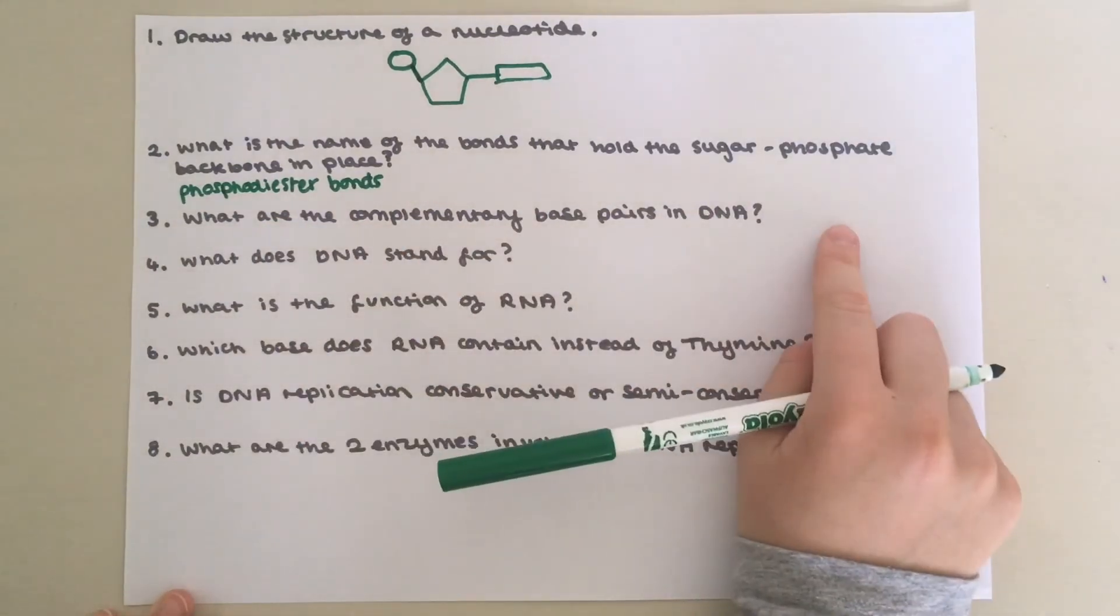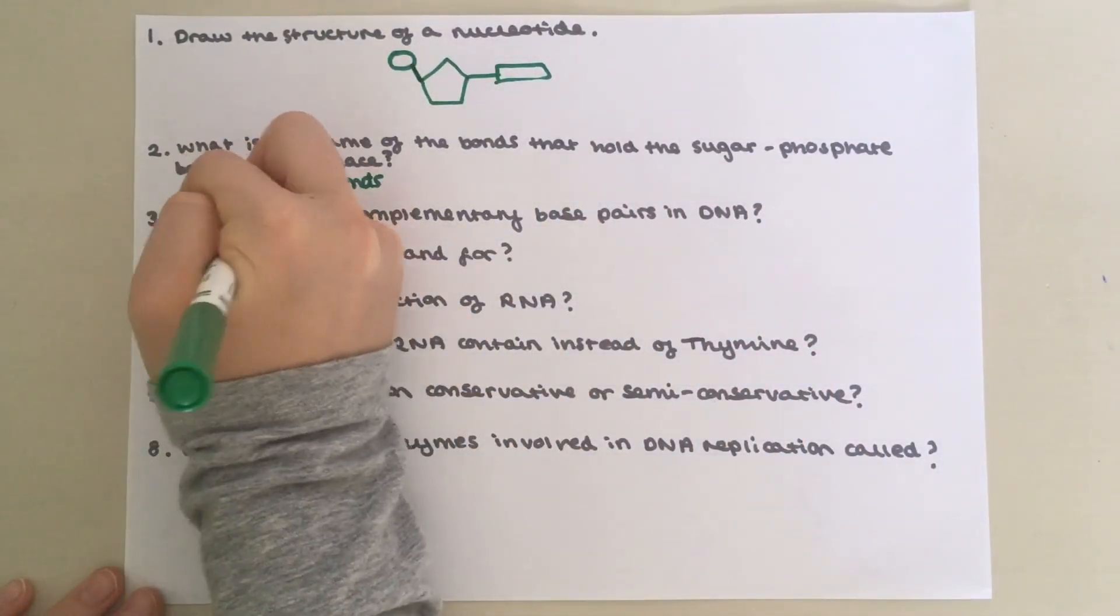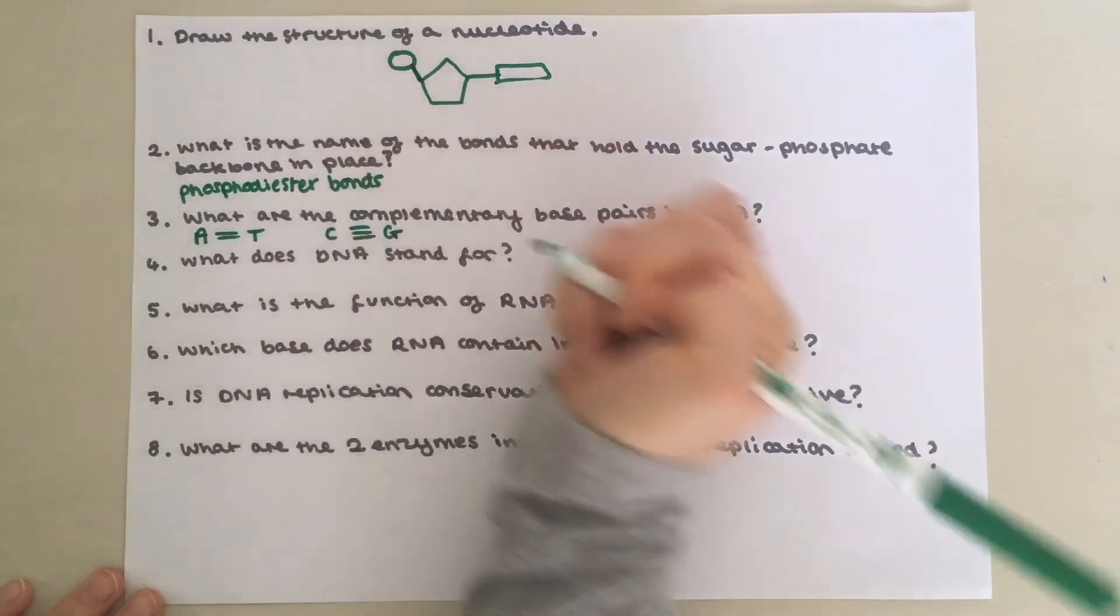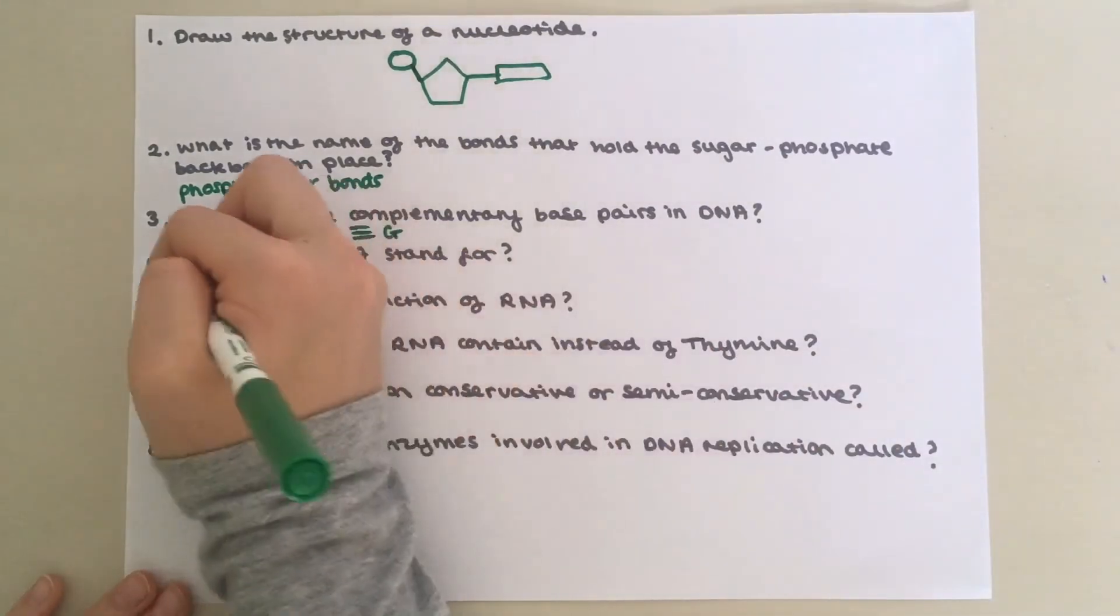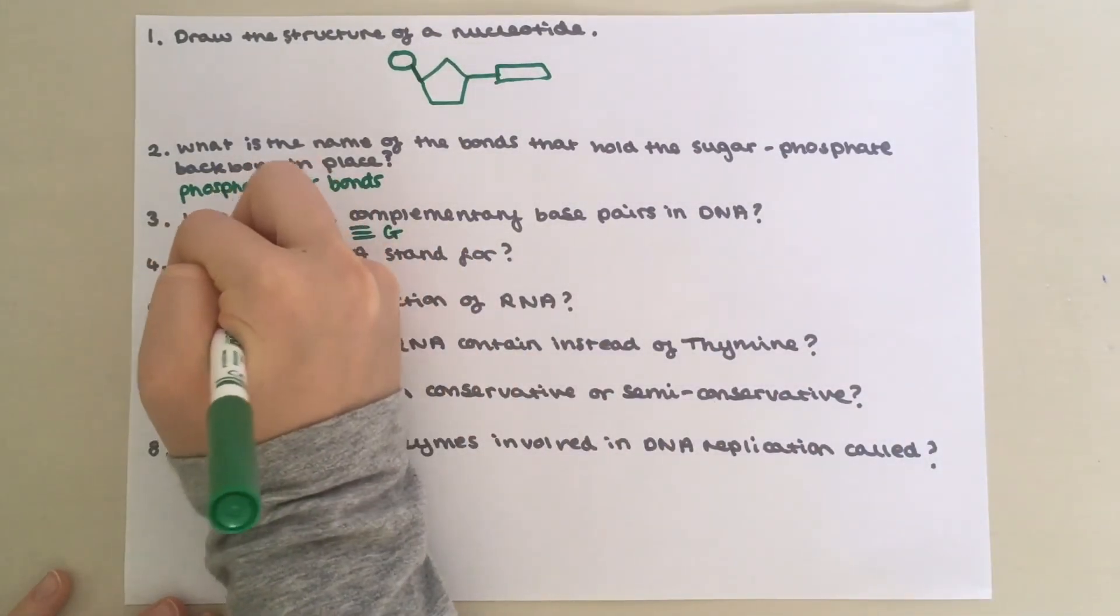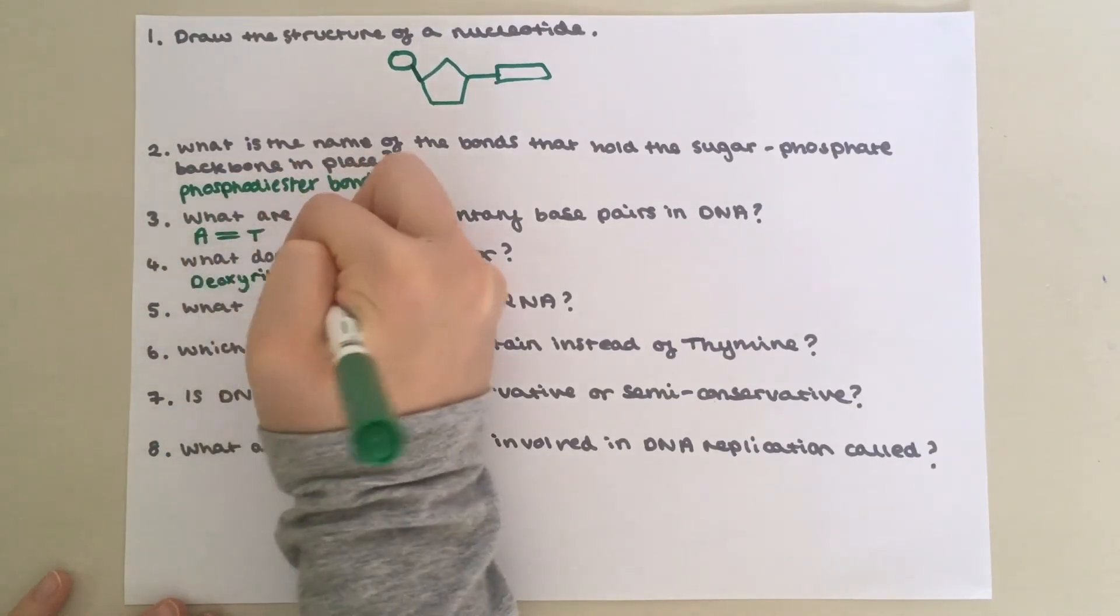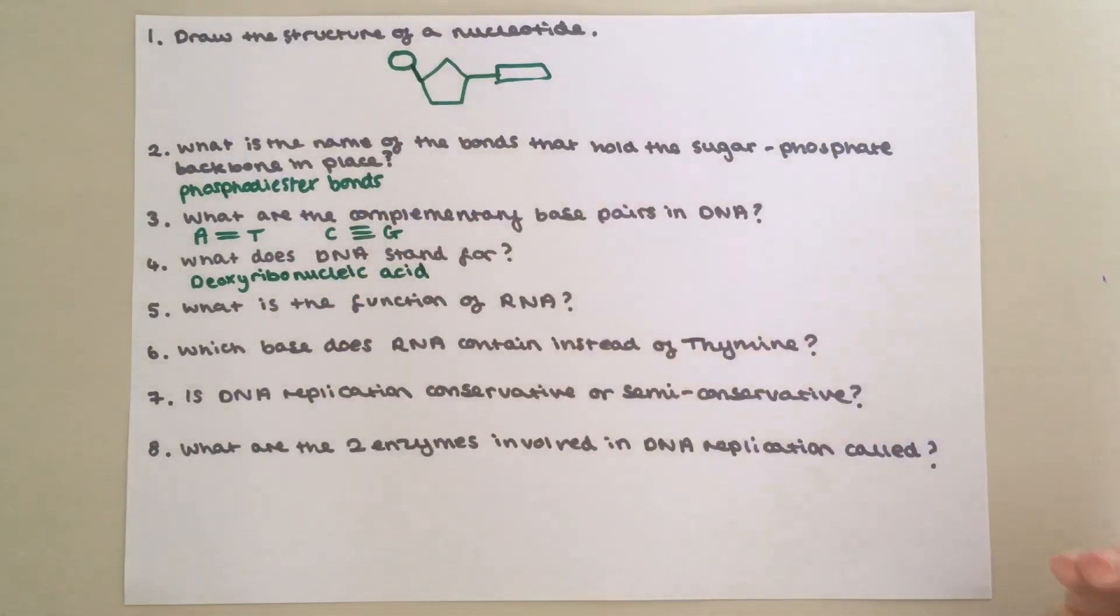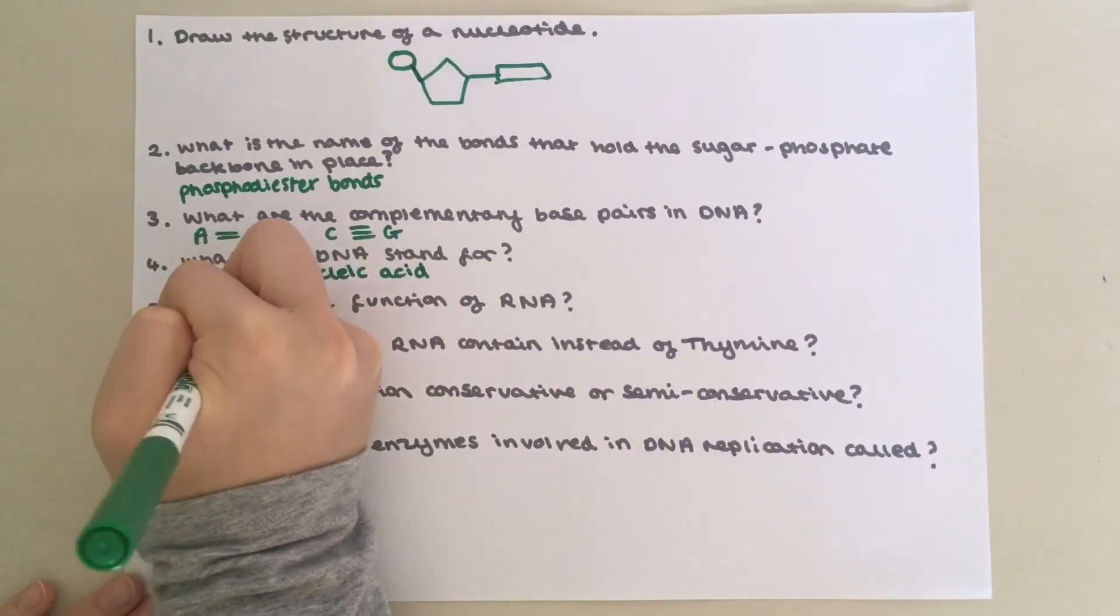Question three, what are the complementary base pairs in DNA? So A will always pair to T and C will always pair with G. Question four, what does DNA stand for? It stands for deoxyribonucleic acid. Question five, what is the function of RNA? Its main function is protein synthesis.